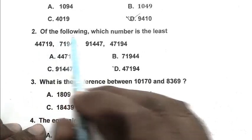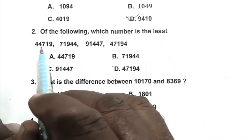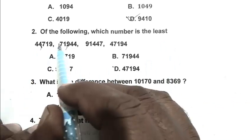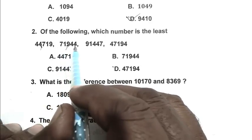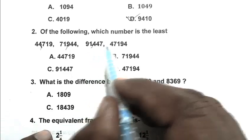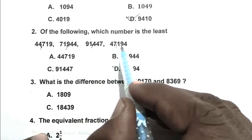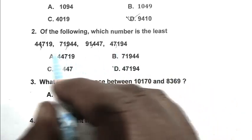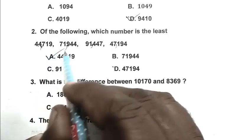Question number two: of the following, which number is the least? First number is 44,719, second number is 71,944, third number is 91,447, and fourth number is 47,194. So 44,719 is the least number, so A is the right answer.